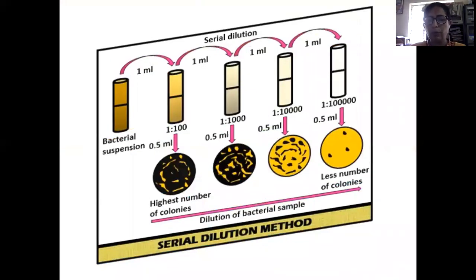In the serial dilution method, we make the bacterial suspension of the soil and then transfer 1 ml of liquid into 9 ml of water and so on, making different dilutions as 10 raised to power minus 2, 10 raised to power minus 3, 10 raised to minus 4 and 10 raised to minus 5. From each liquid we take 0.5 ml and plate it.